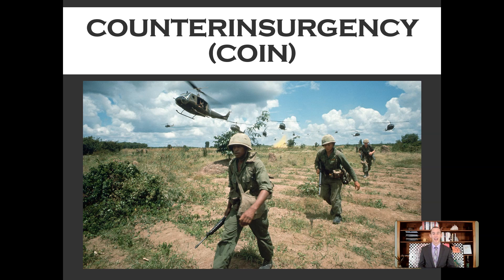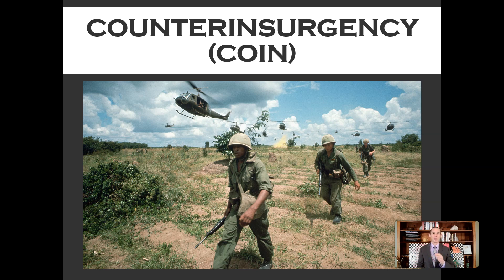In a counter-insurgency, victory depends on the local population you're trying to protect — that same population that looks just like the insurgents. Victory depends on creating a stable government; that is why the objective is nation-building. Everything described here exactly defines what the British were doing in the United States during the American Revolution. During the Vietnam War, especially British military historians loved to point out that the objective is the same — you could switch out some words, but it is the same kind of war.